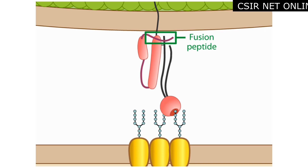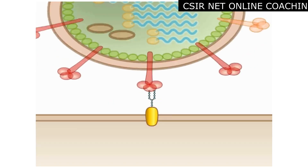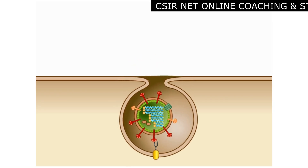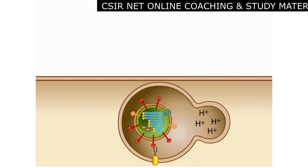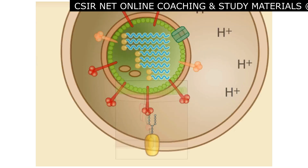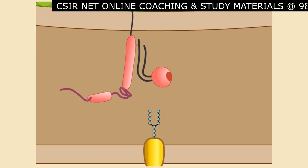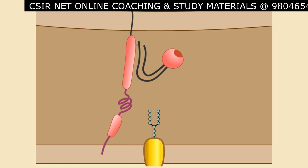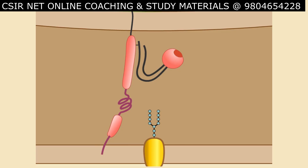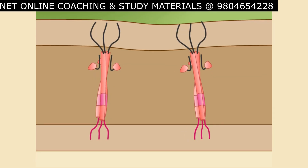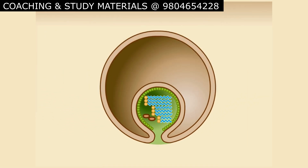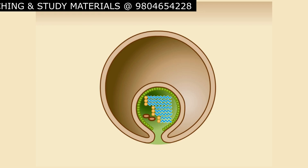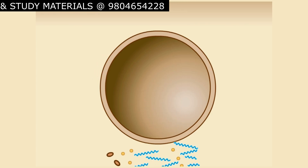The fusion peptide is hydrophobic and buried within the core of the hemagglutinin trimeric complex. The host cell takes up the virus by endocytosis. The endocytotic vesicle then fuses with the lysosome and its interior acidifies. The lowered pH induces conformational changes, triggering the fusion peptide forward to penetrate the vesicle membrane. A number of trimeric hemagglutinin molecules in the same region of the membrane mediate fusion between the viral and the host membrane, expelling the contents of the virus into the host cytoplasm.